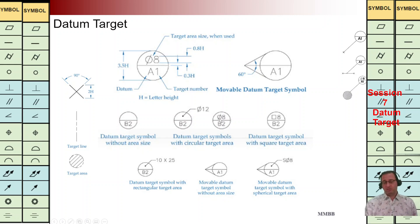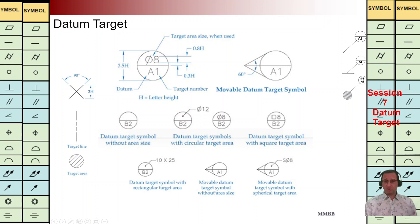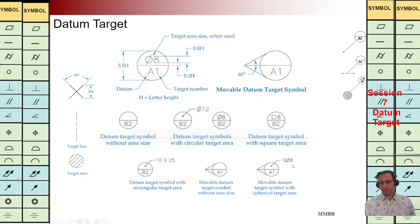The contact area can be a circle with a diameter — for example 12, which can be written outside or inside the circle. If the contact area is a circle with a diameter of 8, that size is written accordingly. If the contact area is square we use a specific symbol, and if it is rectangular we write the dimensions — for example 10 by 25 — which can be outside or inside the circle. If you are using a movable datum target — for example related to datum plane A and target number 1 — and the contact area is spherical, we use an S beside the size. Here we have a spherical target area which is movable.